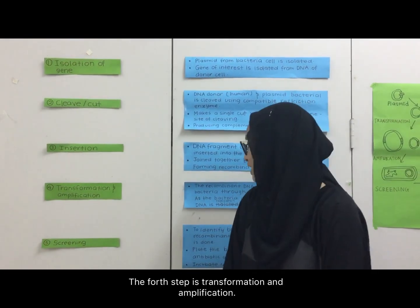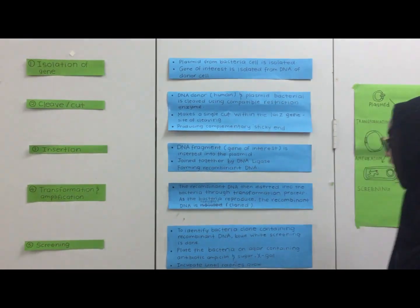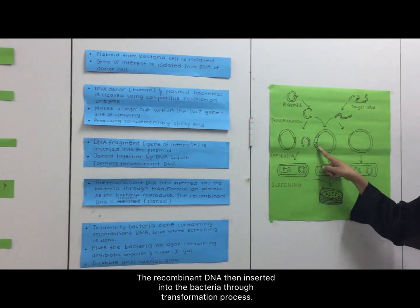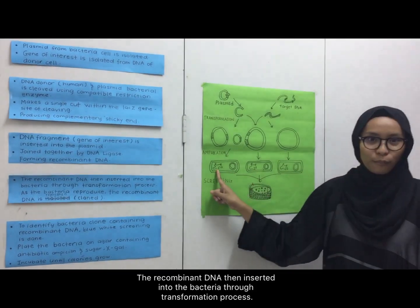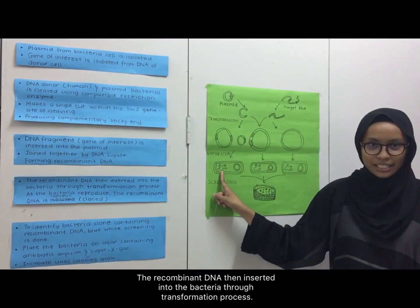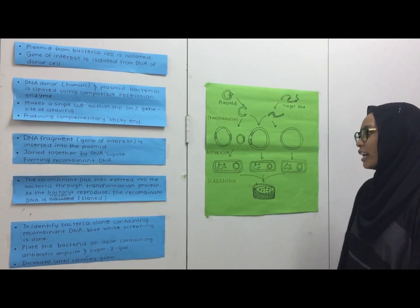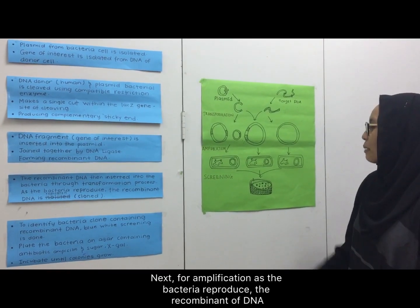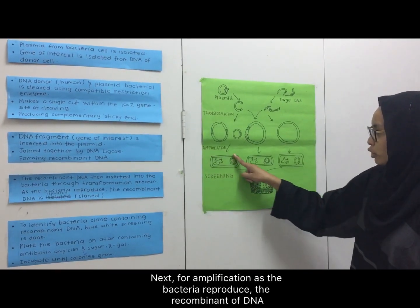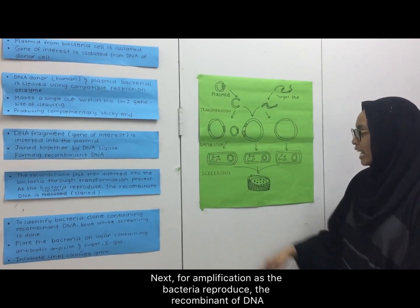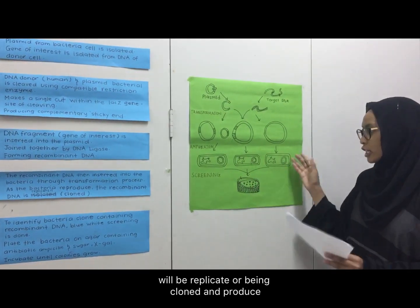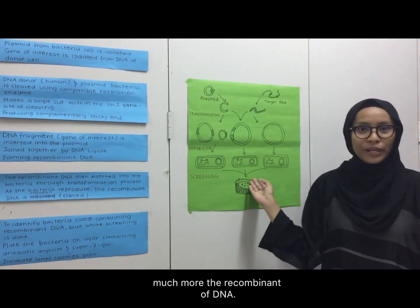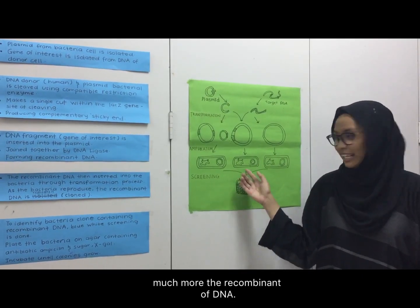The fourth step is transformation and amplification. The recombinant DNA is then inserted into the bacteria through the transformation process. For amplification, as the bacteria reproduce, the recombinant DNA will be replicated or cloned and produce much more recombinant DNA.